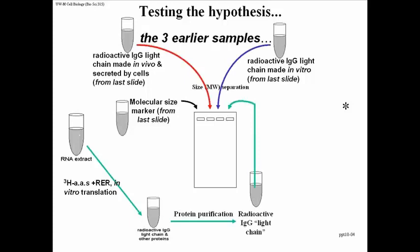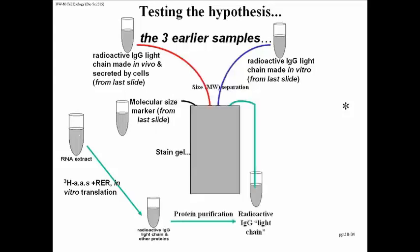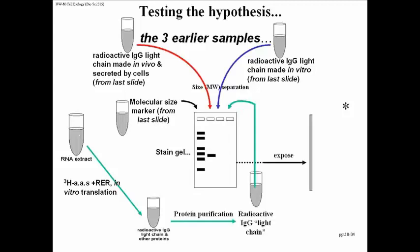We put each of these in one of the lanes — four samples, four lanes. We turn on the electrophoresis, run the gel, and stain the gel. When you stain the gel, all you'll pick up are the markers and the IgG light chain produced by the cells because there's lots of it. But now you put a piece of film on top of this gel and allow time to expose the autoradiograph, then develop it.